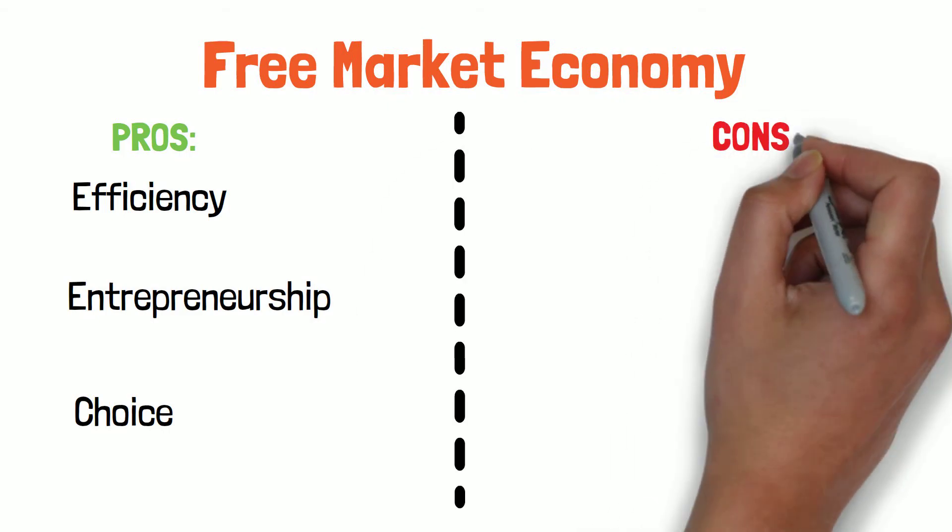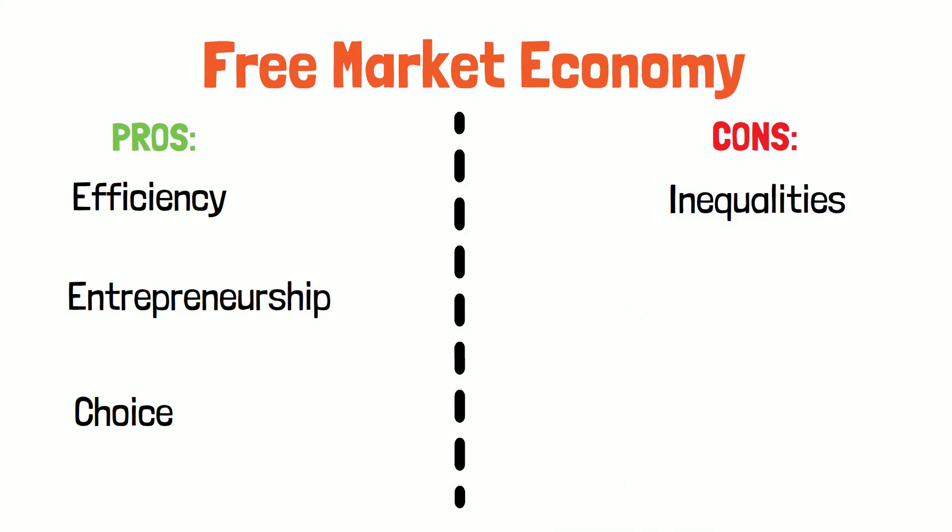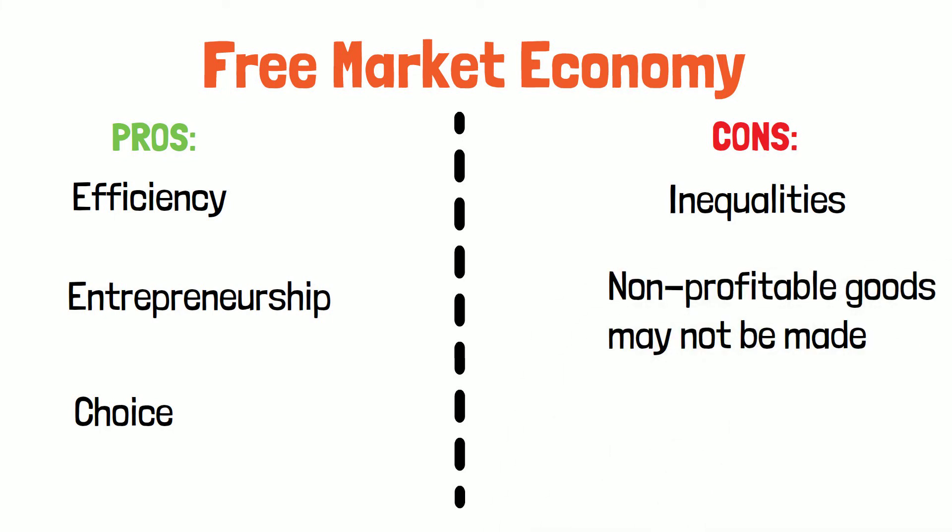Cons of a free market economy: 1. Inequalities — market economies can lead to huge differences in income. This can be controversial, since many people think large differences are unfair, and in a completely free market, anyone who is unable to work, even if it's not their fault, would receive no income. 2. Non-profitable goods may not be made — for example, drugs to treat rare medical conditions may never sell enough for a firm to make any profit, so they would not be made; there is no financial incentive. 3. Monopolies — not the board game, but abusive market dominance. Successful businesses can become the only supplier of a product.